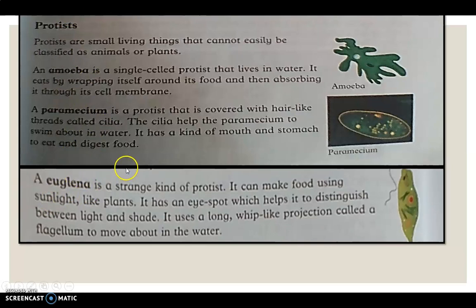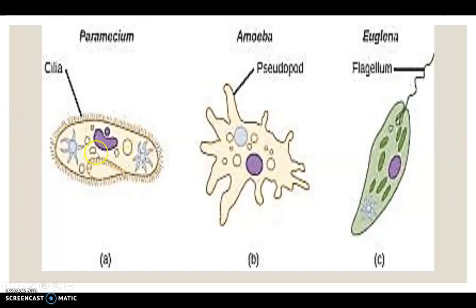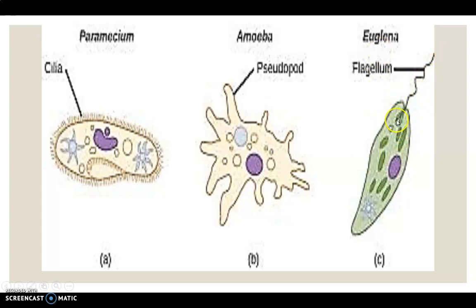Looking at the pictures: the Paramecium has cilia — hair-like projections that help it move in water. The Amoeba has pseudopods — finger-like projections it uses to wrap around food particles and absorb them. The Euglena has a flagellum for swimming and an eye spot that helps detect light and dark. These diagrams clearly show the distinguishing features of each of the three protists.